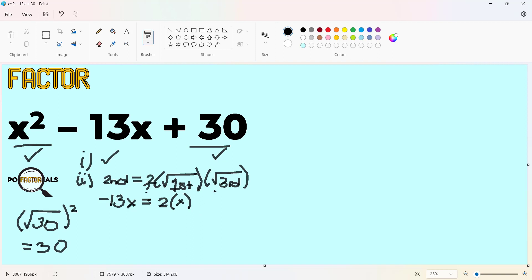Two times the square root of the first term is x. The square root of the third term is actually square root of 30. But, when you try to use square roots of any constant, you'll have plus minus. And let's multiply all of this.